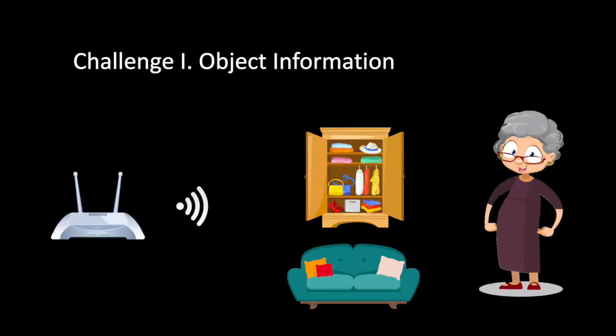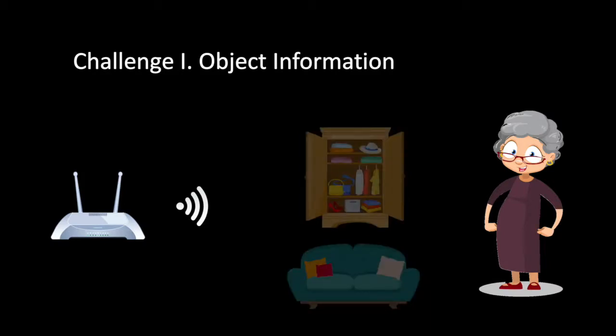The first challenge is that RF signals cannot capture objects. More specifically, RF signals will traverse through most of the furniture while reflecting off human body. However, an important part of my grandma's daily life is her interactions with objects. For example, understanding whether she opens a fridge or opens a medication cabinet, or whether she sits on the TV couch or on the bed can help us understand her activities better. So what can we do?